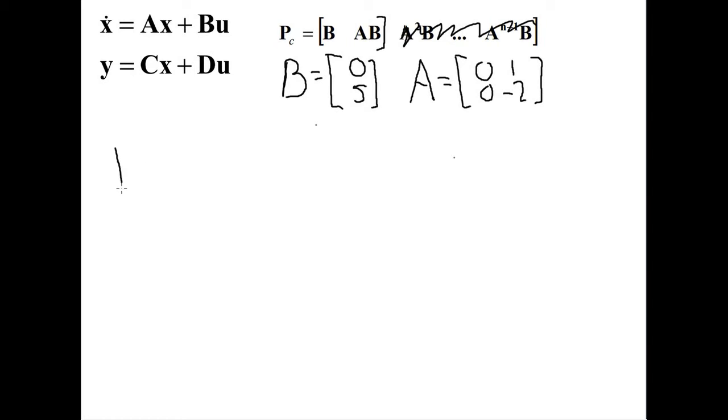Form our controllability matrix Pc which is equal to [0, 5], and then you have the AB which is...